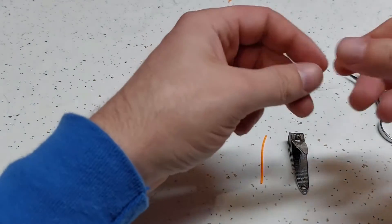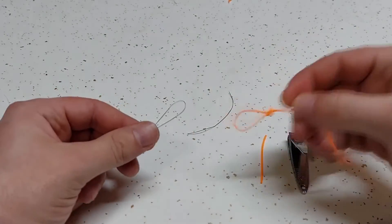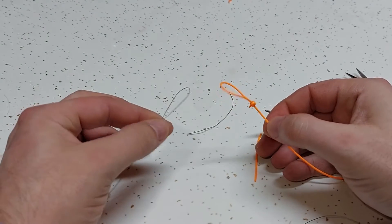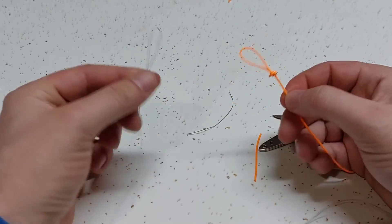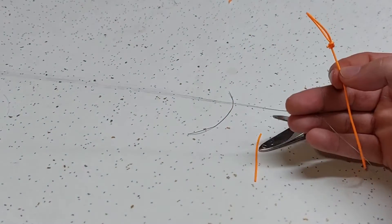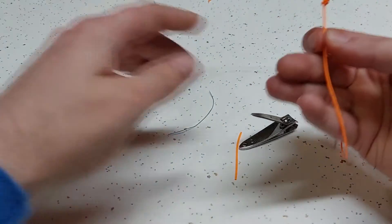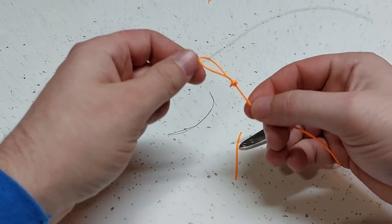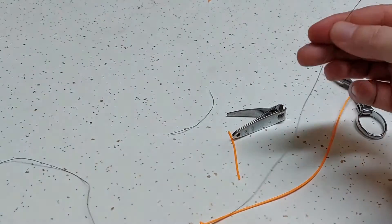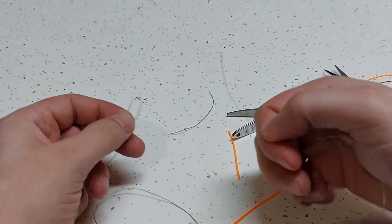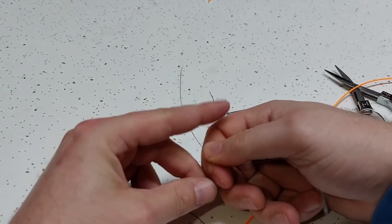All right, now you want to attach these two loops. Now there is a wrong way to do this - do not do it this way. Do not take the end of your line and run it through this loop and then run it through this loop right here.